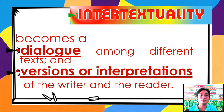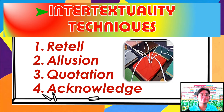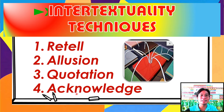According to Chongzon, intertextuality is the modeling of a text's meaning by another text — seen when an author borrows or transforms a prior text or refers to another text without quotation marks. According to Kristeva, a French author, critic, educator, and semiotician, intertextuality is a mosaic — a mixture or combination of different quotations that adapts and changes a text through adding or eliminating parts of it. Thus, intertextuality becomes a dialogue among different texts and versions or interpretations of the writer and the reader. Intertextual reading is the perception of similar comparabilities from text to text. There are four techniques of intertextuality: retell (when one writer renders information verbally), allusion (a passing reference or indirect mention), quotation (a passage or expression that is quoted), and acknowledge (to cite or refer to a text to give credit).